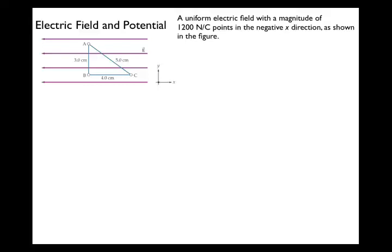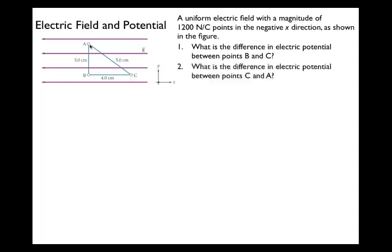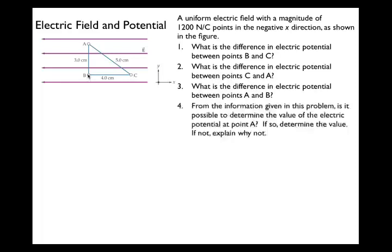Here's another sample problem. We have a uniform electric field pointing to the left with magnitude 1200 N/C, and a 3-4-5 triangle arrangement of points. We want to find the electric potential difference between points B and C, between C and A, between A and B, and determine whether we can find the actual value of electric potential at point A.